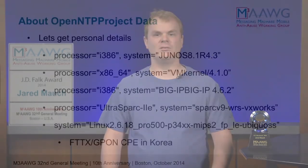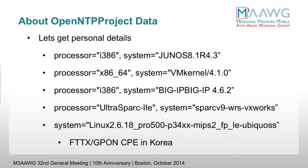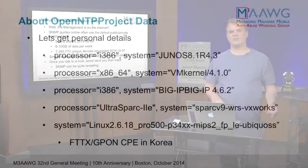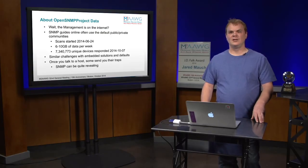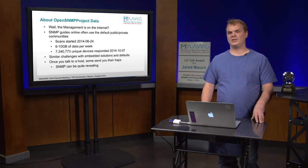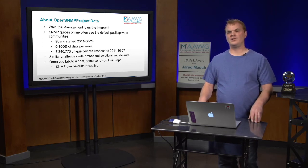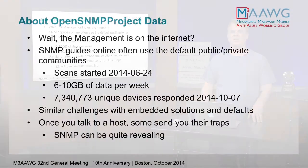You can tell the Juniper version of software, see that people are running VMware, BigIP, and really interesting insights into the CPE used in the home — which takes us over to SNMP data. The SNMP data gets to be really interesting because you have these management protocols being exposed directly on the internet.